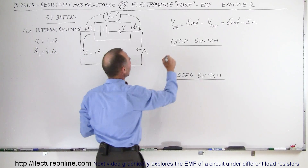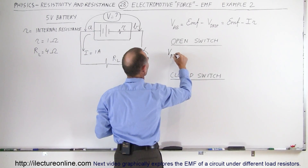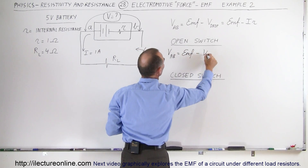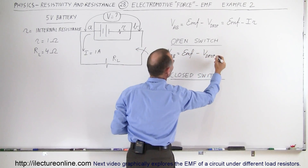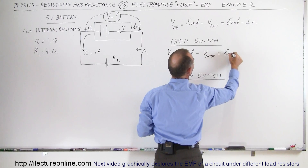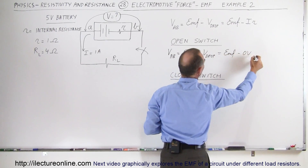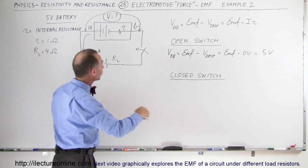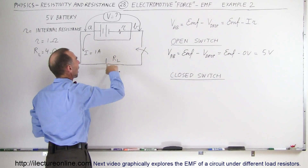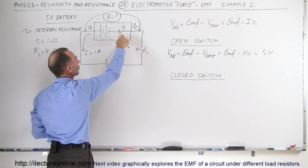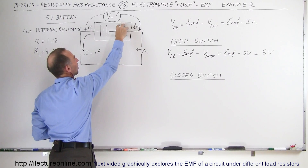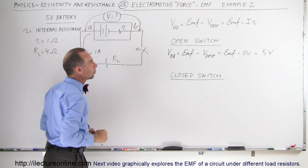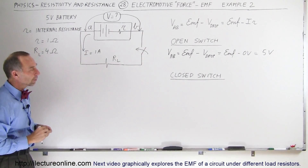We can say that the voltage from A to B equals the EMF minus the internal voltage drop, which is the EMF minus 0 volts, simply 5 volts. With the circuit open and no current flowing externally or internally, there's no voltage drop across the internal resistance, so the EMF simply equals the voltage between A and B.